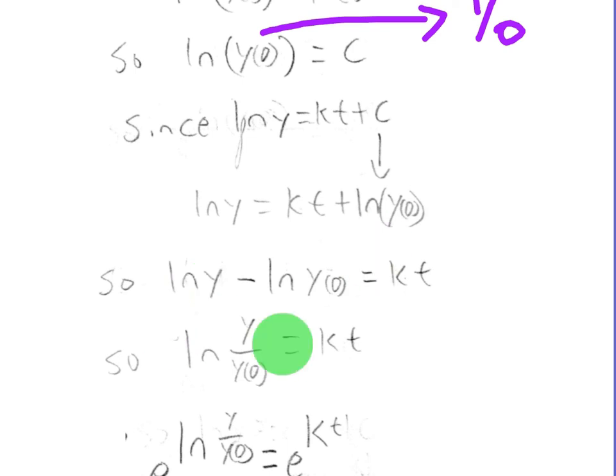Now, what we're going to do is subtract this from both sides. So we're going to move it over to the left. Now, we have natural log of y minus natural log of y sub 0, or y of 0, is equal to kt.